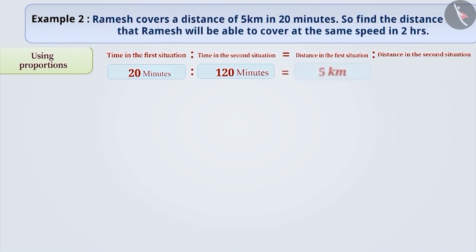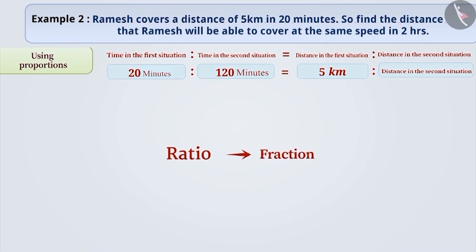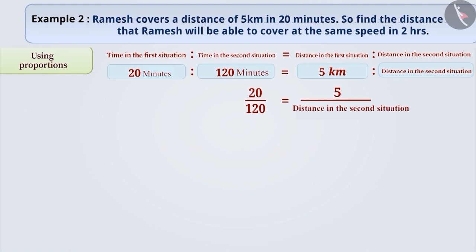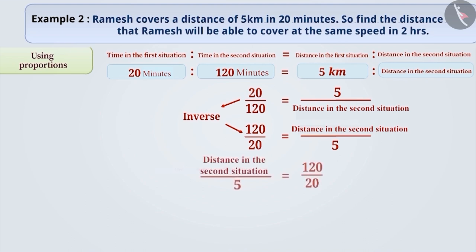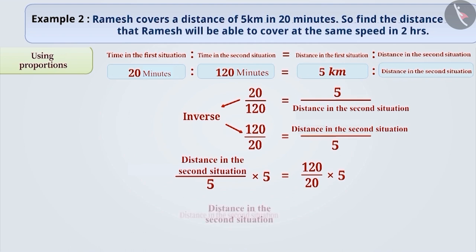Similarly, the distance covered in the first situation is 5 kilometers and we have to find the other distance. The ratio expressed as a fraction would be 20 by 120 equal to 5 kilometers by the distance in the second situation. To solve this, take the inverse of the fraction on both sides by swapping the numerator and denominator. So 120 by 20 is equal to distance of the second situation by 5. Multiply both sides by 5: distance in the second situation equals 120 by 20 into 5, which is equal to 30 kilometers.